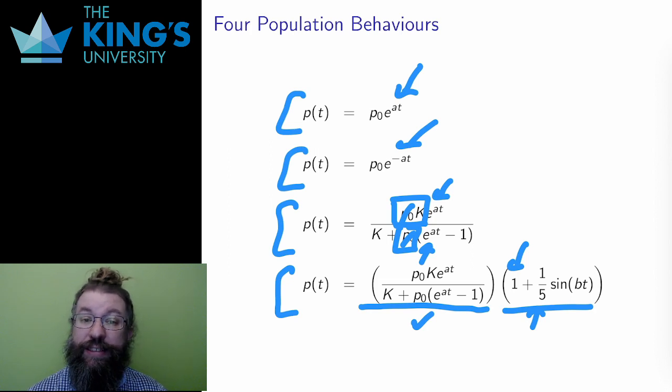In any case, for all four models, the limit as t goes to infinity was the way that I investigated the long-term behavior, what the population was eventually going to do.